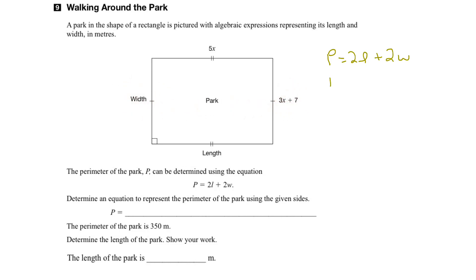So let's put those values in. We'll put twice the length, which is 5x, plus twice the width, which is 3x plus 7. So what we do is we then simplify this equation as much as we can.